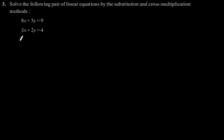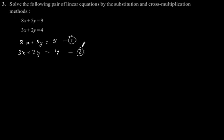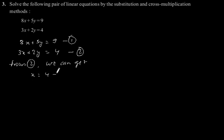So 8x plus 5y is equal to 9 is our first equation, and 3x plus 2y is equal to 4 is our second equation. From equation 2, we can get x is equal to 4 minus 2y, divided by 3. Let's say this is equation three.